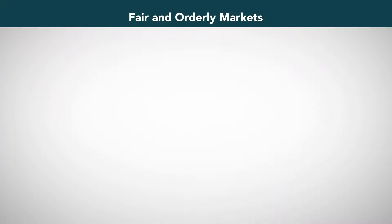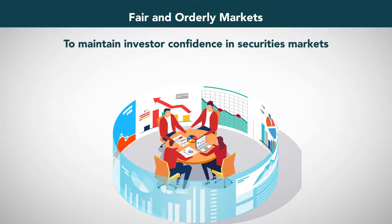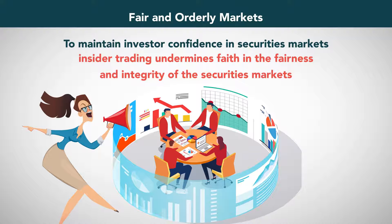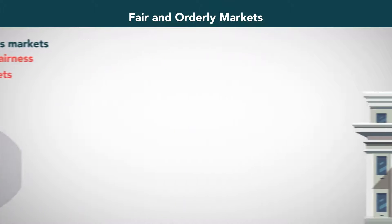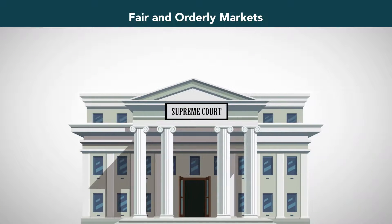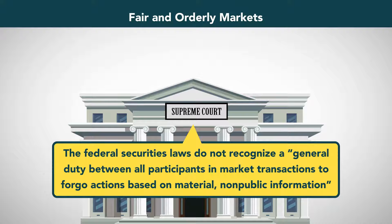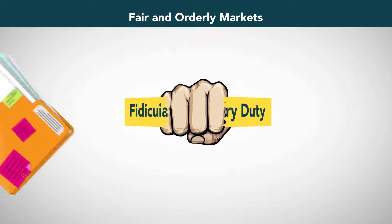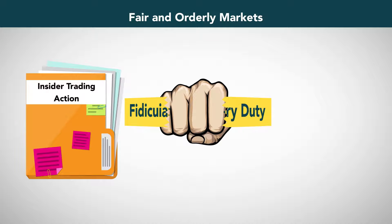Fair and Orderly Markets. A secondary reason for prohibiting insider trading is to maintain investor confidence in securities markets. Insider trading undermines faith in the fairness and integrity of the securities markets. Still, there are limits to this principle. As the Supreme Court stated, the federal securities laws do not recognize a general duty between all participants in market transactions to forgo actions based on material, non-public information. Breach of a fiduciary duty somewhere along the way is essential to an insider trading charge.